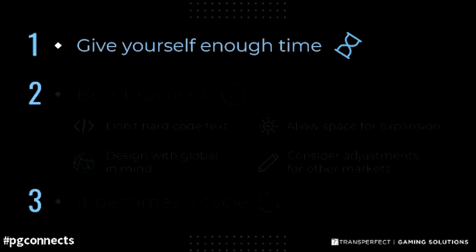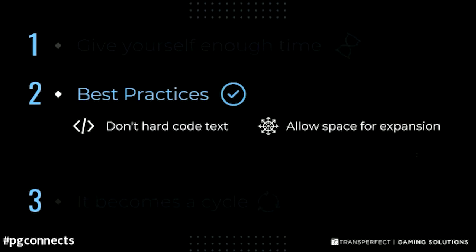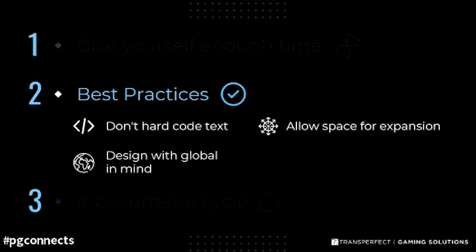There are also best practices around the actual designing of the content. Don't hard code text into your game. Think about text expansion — you'll need special characters. A lot of people forget that there are languages that go from right to left instead of left to right. You also need to think about design interface, dates, times, and formats that might need to be changed for different markets. Remember that icons and colors mean different things in different markets — the very typical one is what the color red means in the West versus the East.